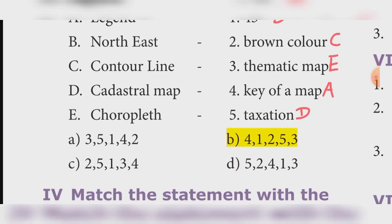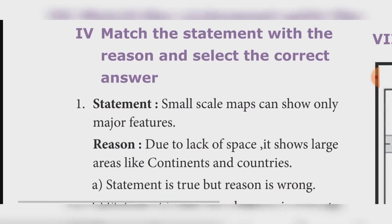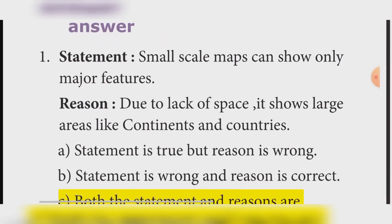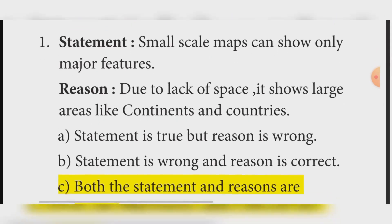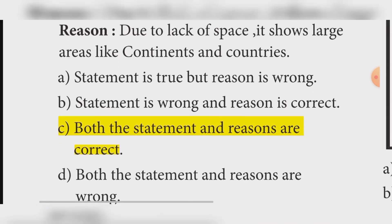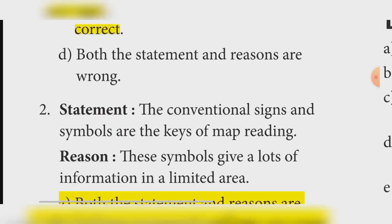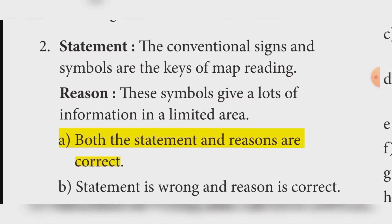Match the statement with the reason. Statement: Small scale maps can show only major features. Reason: Due to lack of space, it shows large areas like continents and countries. Answer: Option C — Both the statement and the reason are correct. Second: The conventional signs and symbols are the keys of map reading. Reason: These symbols give lots of information in a limited area. Answer: Option C — Both the statement and the reason are correct.